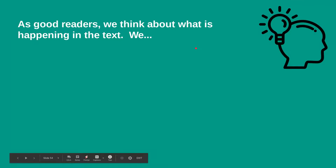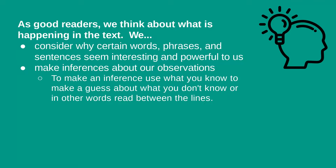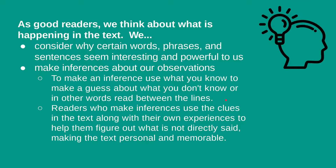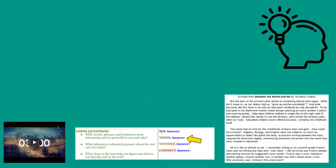For 'think': as good readers we think about what is happening in the text, consider why certain words, phrases, and sentences seem interesting and powerful, and make inferences about our observations. To make an inference we use what we know to make a guess about what we didn't know — in other words, read between the lines. Readers who make inferences use clues in the text along with their own experiences to figure out what's not said directly, making the text personal and memorable. You can then back up your interpretations with reasoning. For the think questions you have three options — select one to answer.